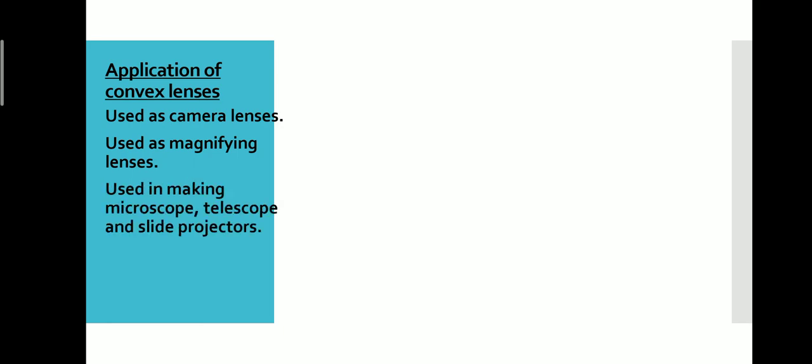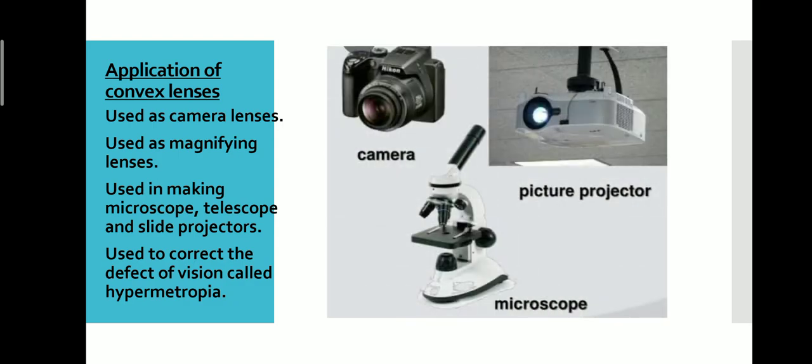The applications of a convex lens: it is used in camera lenses and as a magnifying lens. In a magnifying lens, the object is kept between the optic center O and F, so you can see an enlarged virtual image. It is also used in making microscopes, telescopes, and slide projectors. It is also used to correct the defect of vision called hypermetropia. Convex lenses are converging lenses.